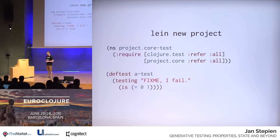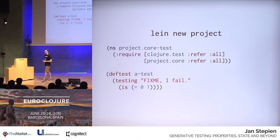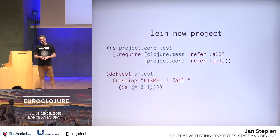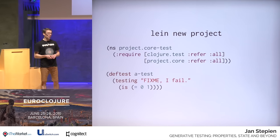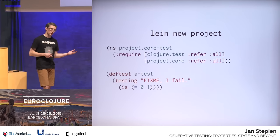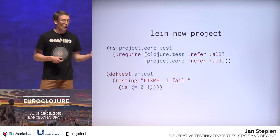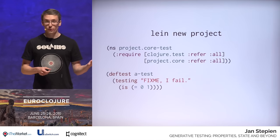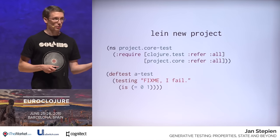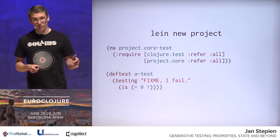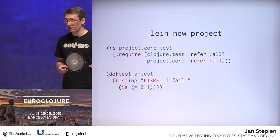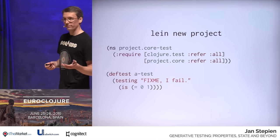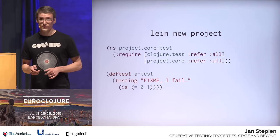Let's talk about testing. The testing culture is quite strong in the Clojure community. When you generate your new project, typically with Leiningen, you get one test for free as part of the project skeleton. And to make matters worse, the test fails, and you have to fix it. This is good.